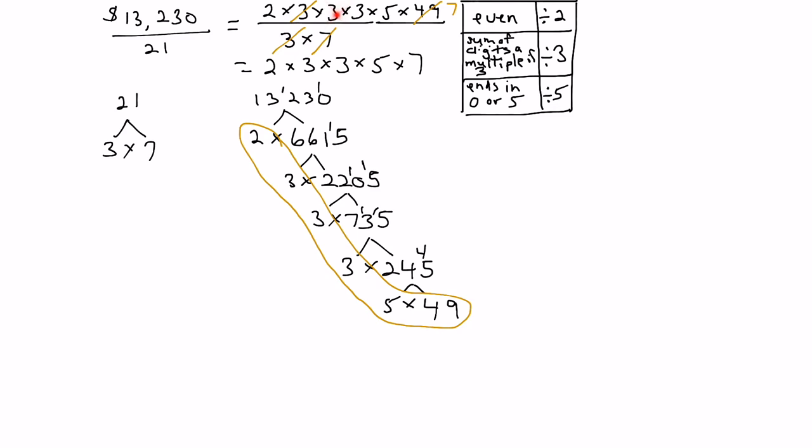Let's start with 2 times 3 is 6, times 3 more is 18. The answer would be 18 times 5 times 7. Then we can do 18 times 5: 5 times 8 is 40, carry the 4, 5 times 1 is 5 plus 4 gives us 90 times 7. And 7 times 90: 7 times 0 is 0, 7 times 9 is 63. So 13,230 divided by 21 is 630.